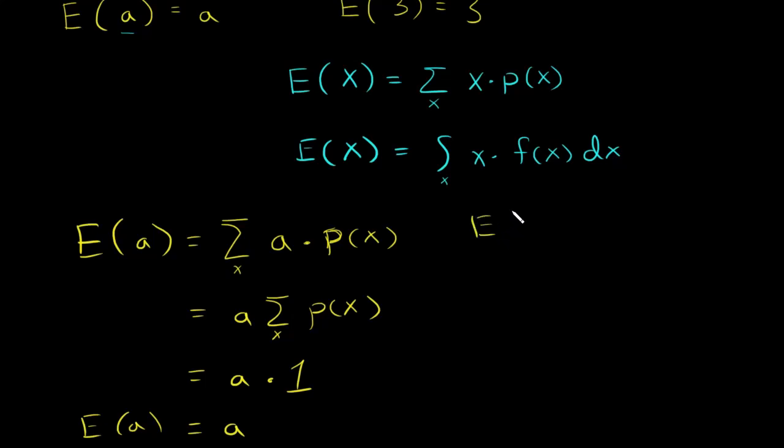If x is continuous, we can show the exact same thing. We'd integrate over x a times the probability density function dx. You can pull a out because it doesn't depend on x.